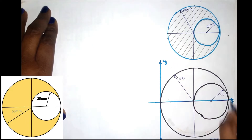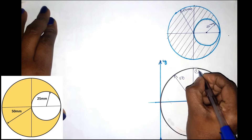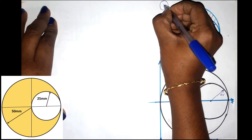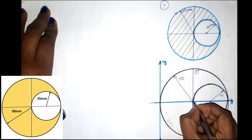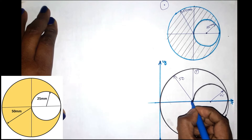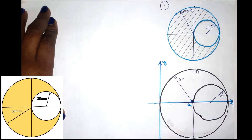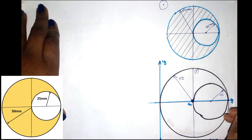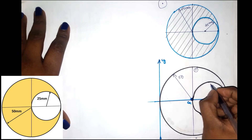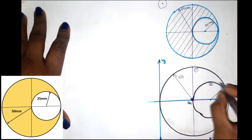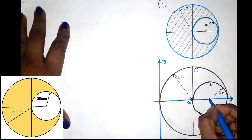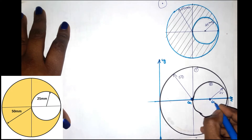The first section is the large circle. We will identify and mark its centroid as G1. The second section is the small circle — we mark its center as G2. This center is the centroid of that portion, which we call G2.